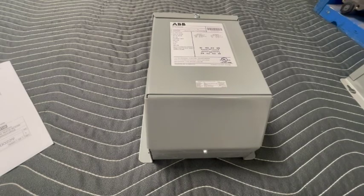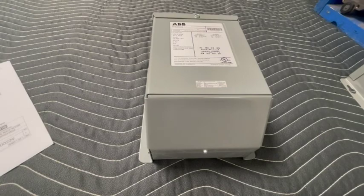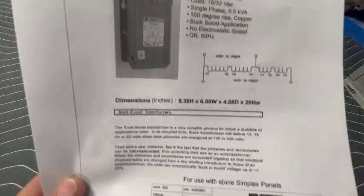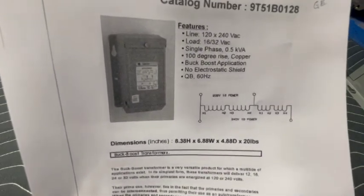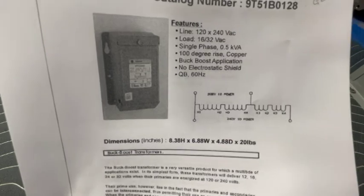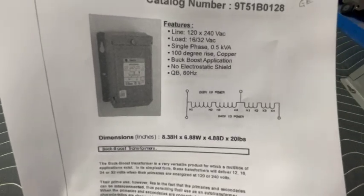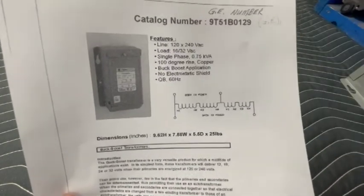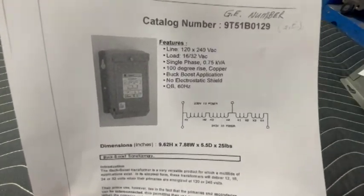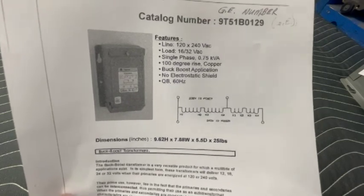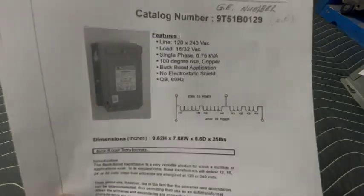There's basically two different types of buck boost transformers that we're going to look at today. One would be a 0.5 kVA for a simplex station and you can see here it says 0.5 on this one, has the voltage and it also has the wiring configuration on there. If we look at the one for a duplex system you'll see that it's a 0.75 kVA, however the wiring configuration is exactly the same. So the only difference between these two is the actual size.